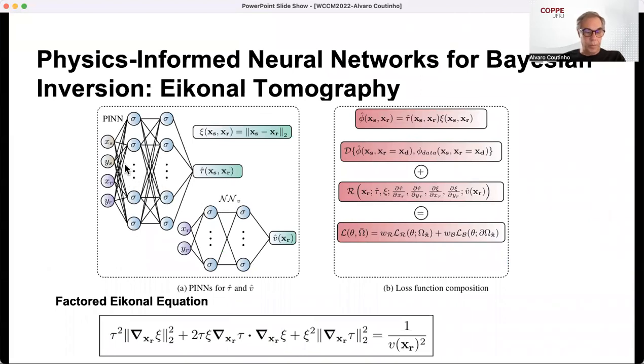It has an input to the position of source and reflectors, and we solve for the travel times, which is decomposed in Tau hat and C, and D is the error in the data. Here are the residual, and the loss is a composition for the residual and the differences in your data. For solving an inverse problem with PINN in Bayesian way, we have an auxiliary neural network with inputs, the reflectors, and the output, the velocity fields. So this stage one is basically the Bayesian Eikonal tomography.